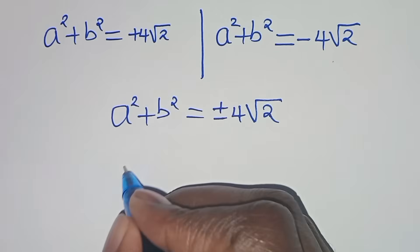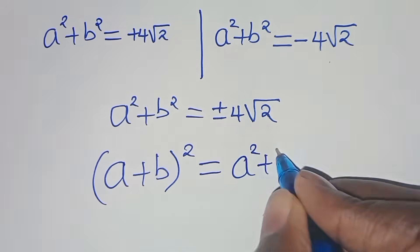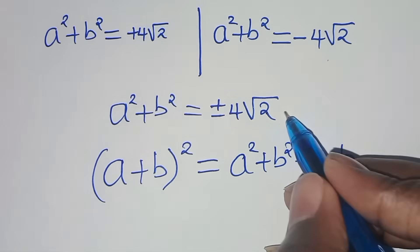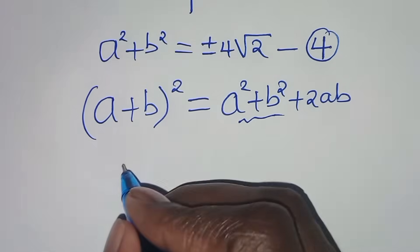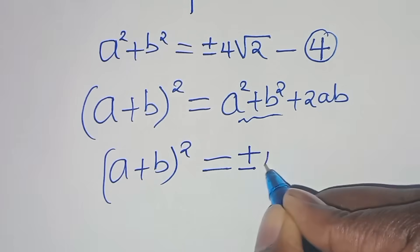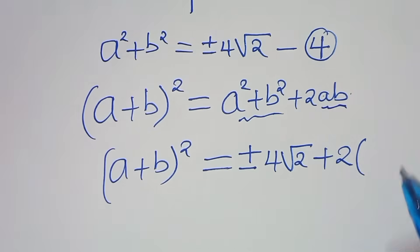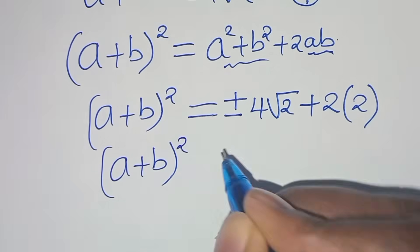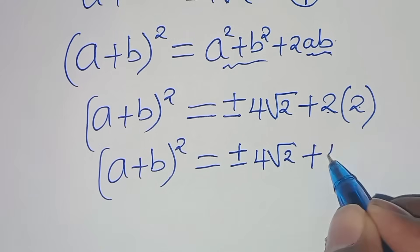Next, we use the identity (a plus b) squared equals a squared plus b squared plus 2ab. Substituting from equation 4 for a squared plus b squared, and ab equals 2 from equation 2, we have (a plus b) squared equals plus or minus 4 square root of 2, plus 2 times 2, which equals plus or minus 4 square root of 2 plus 4.